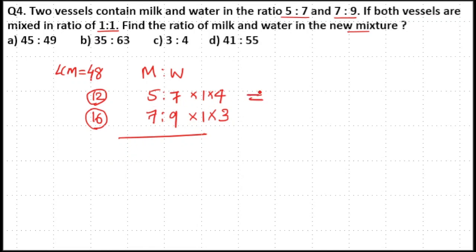So when you multiply 4 with 5:7, 4 into 5 is 20, 4 into 7 is 28. 3 into 7 is 21, 3 into 9 is 27.